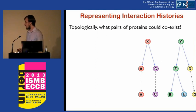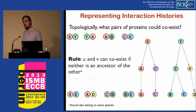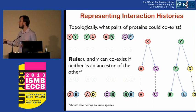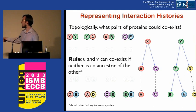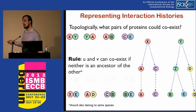The first question is: topologically, what pairs of proteins could even coexist and potentially interact? A simple rule applies: any pair of proteins U and V where neither is an ancestor of the other could potentially interact. For example, X and Y can obviously interact, but Y and A could also interact if X duplicated before Y did. Any pair of proteins belonging to the same species where one is not an ancestor of the other is allowable in this topology.